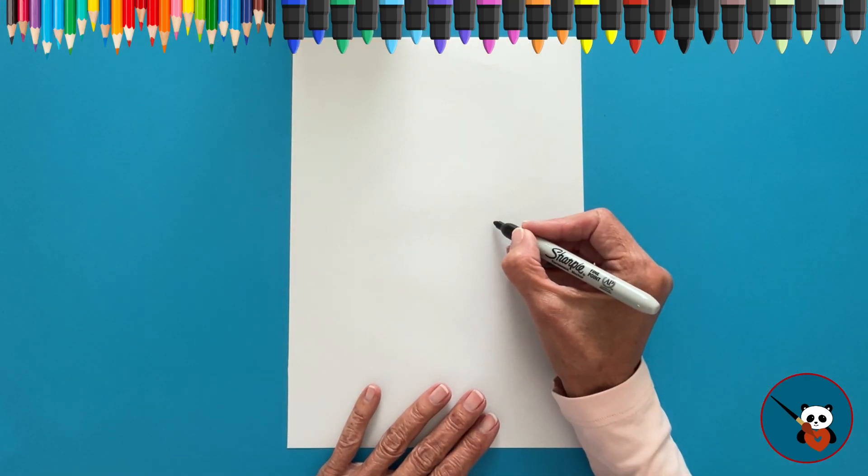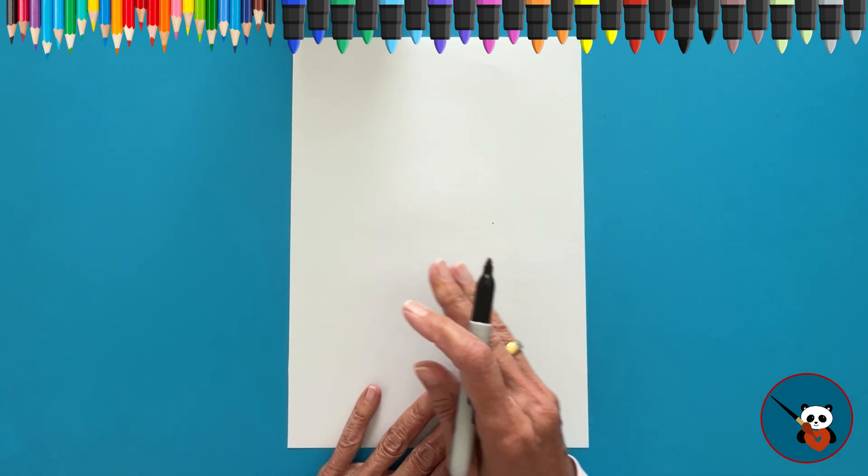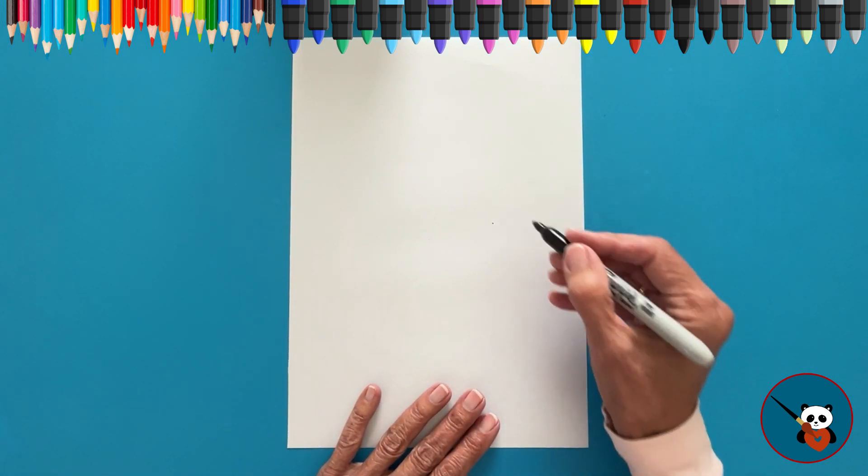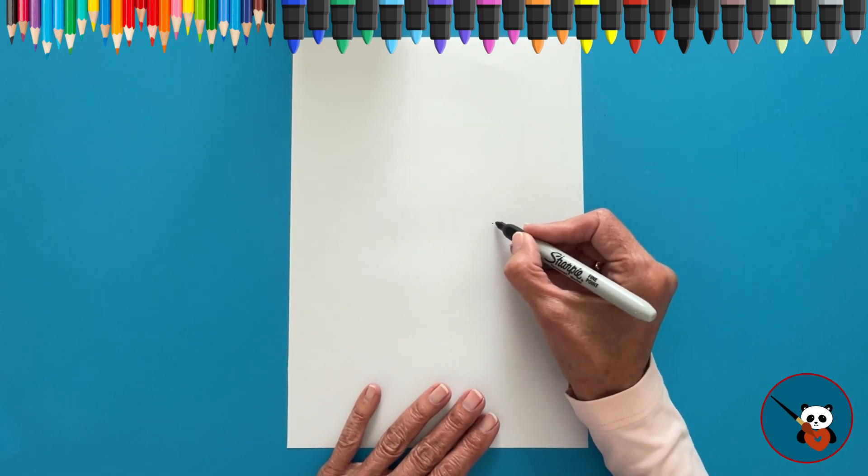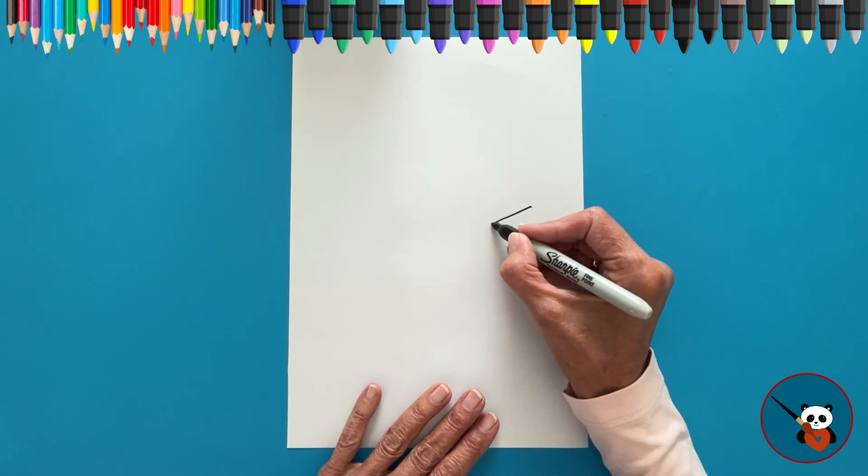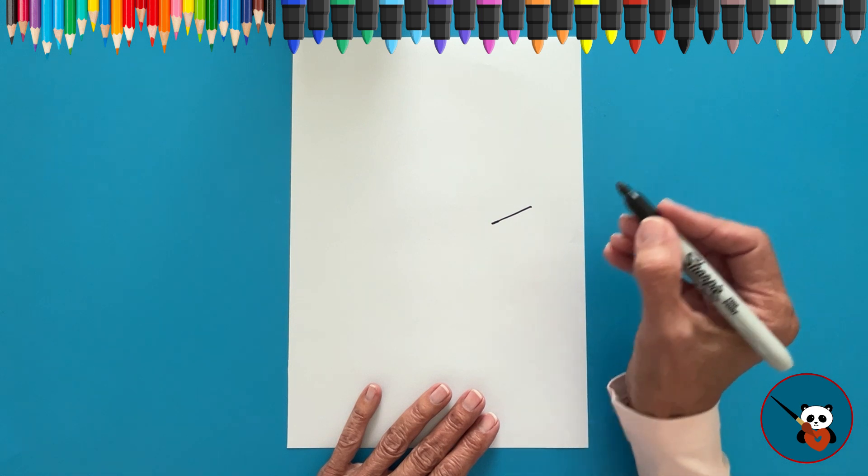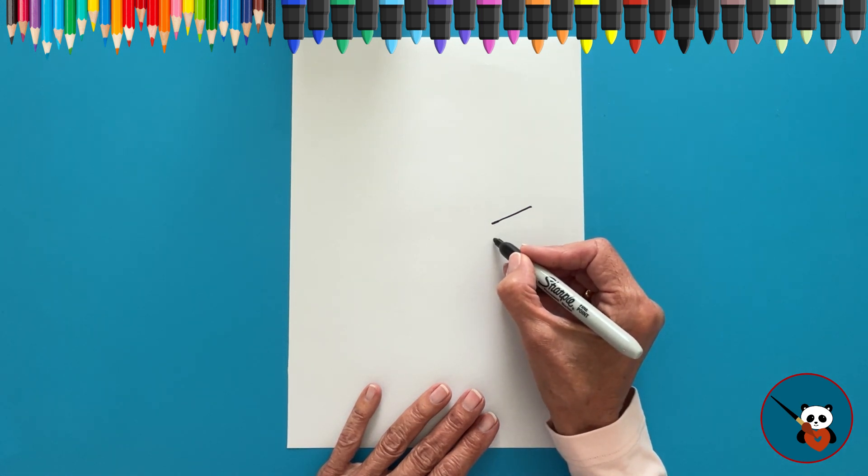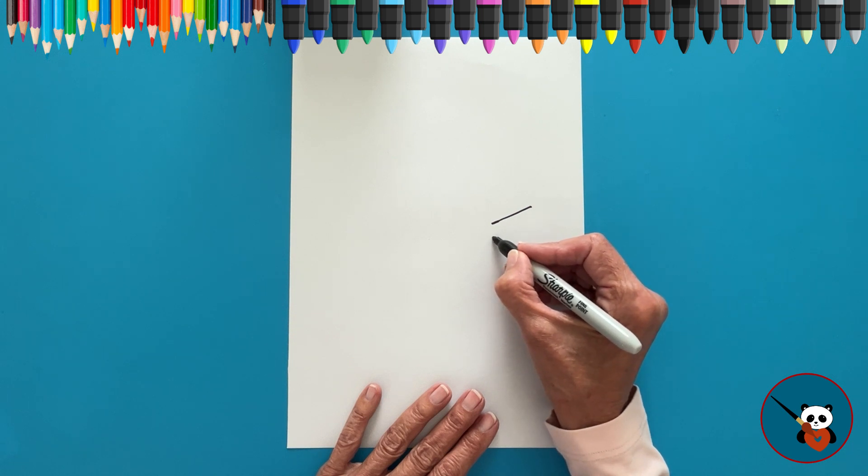Let's kick things off on this side of the paper, creating Red's expressive eyebrow. Make a straight line slanting to the side. Now, underneath that, add another slanted line.